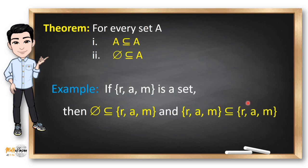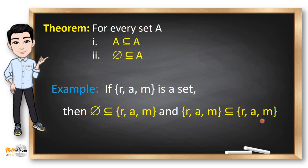It is also important to note that for every set A, A is a subset of A. And an empty set is always a subset of any set. So we can say that the empty set is a subset of a set containing R, A and M, and that this set is also a subset of itself.